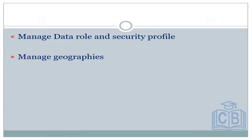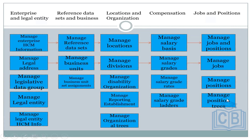Data roles and security profiles, managing geographies, managing enterprise and legal entities, reference data sets and business units — these are all important topics. The enterprise structure contains the highest level: enterprise, then division, then business unit, then legal entity, then department, then reference data sharing. We will learn each one: enterprise, division, business unit, legal entity, and department.